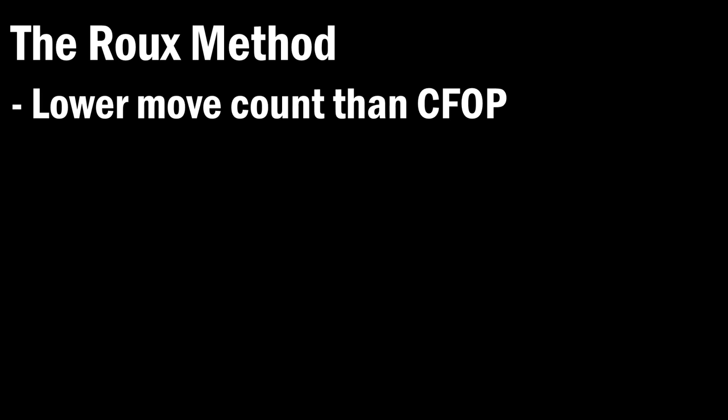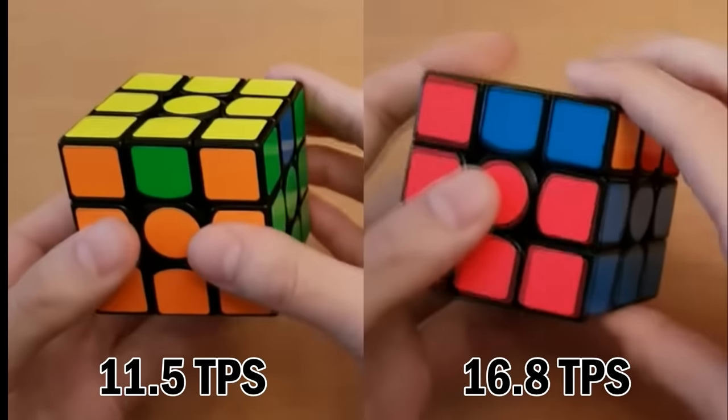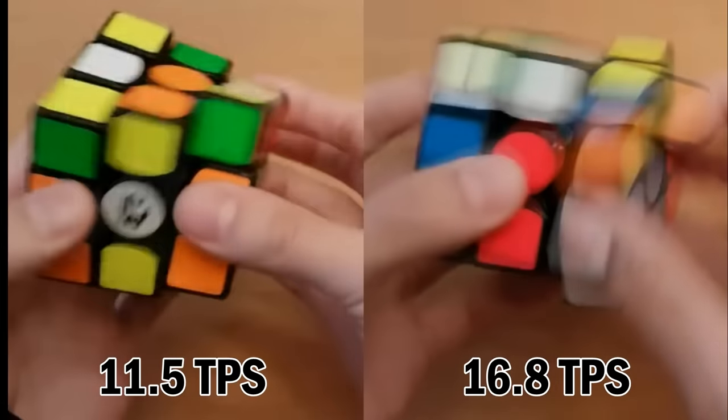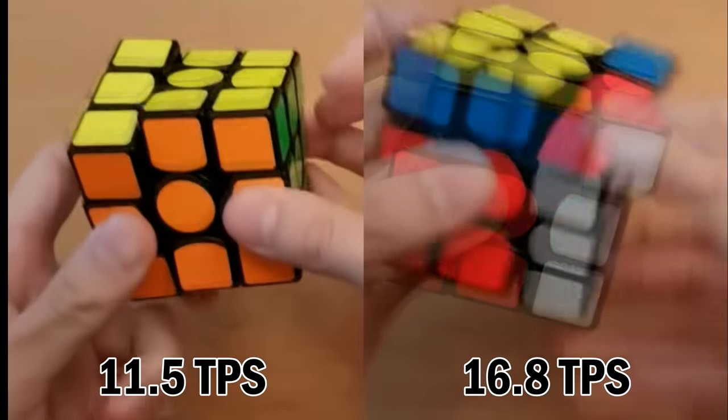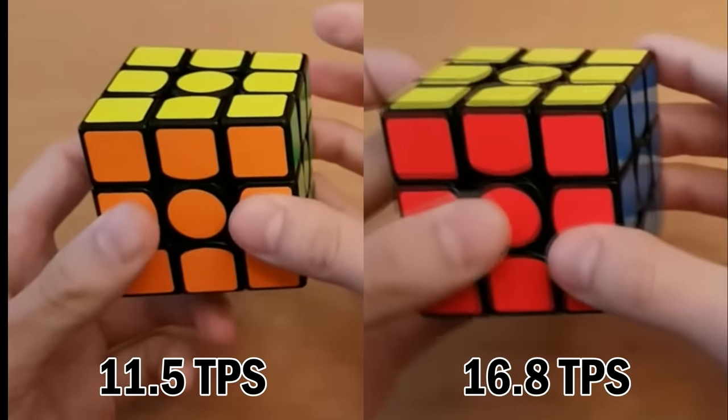The number one advantage when using Roux is that it has a lower move count than CFOP. In fact, the move count is a lot lower, so you can achieve the same times with a lot slower turning speed. However, while this is an advantage, it doesn't tell the whole story, because with CFOP, you can do RUF instead of MU, which can be a lot faster. It's not always faster, but generally you will be able to do moves faster in OLL and PLL, compared to LSE, which is Roux's step that has M and U moves.